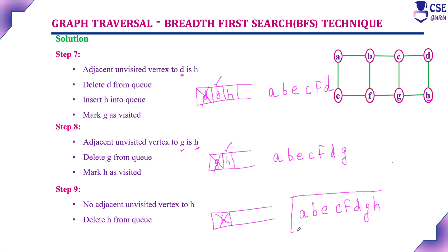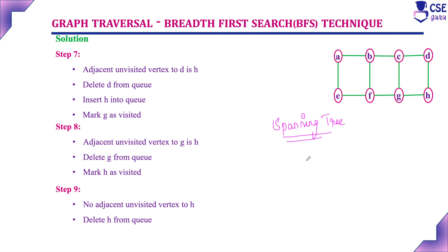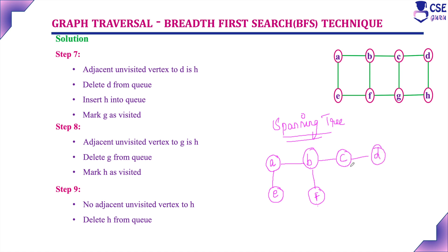So this is the BFS traversal output for this given graph. First we visit A, then B and E, then adjacent to B we visit C and F, then adjacent to E — F is already visited, then adjacent to C we visit D and G, then adjacent to F — G is already visited, then adjacent to D we visit H. This is the traversal output. For the spanning tree: we visited A, then B, then E, then C and F from B, then D and G, then finally H through D.